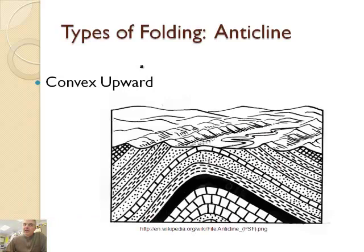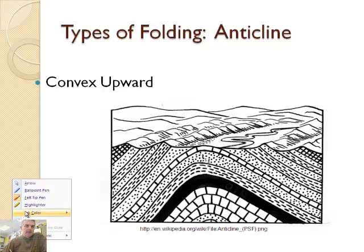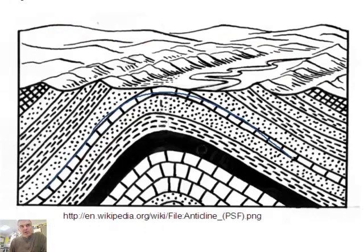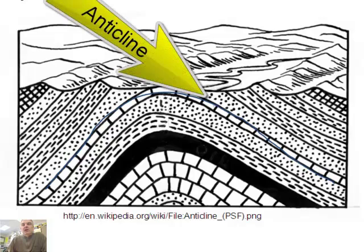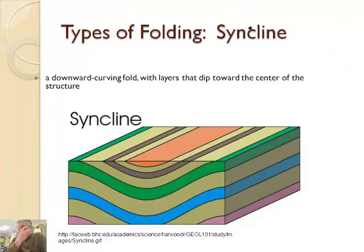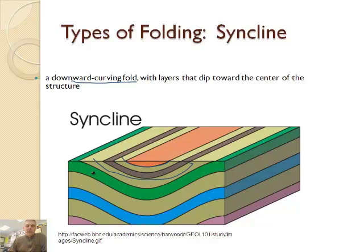Now there are two kinds of varieties of folding. There is an upward fold, as we see here. Notice how this feature right here is an upward, or convex upward fold, and that is called an anticline. Anticline is where there's an upward convex shape. And the opposite is called a syncline. A syncline is a downward curving fold. Notice how this is the opposite of what we just saw.